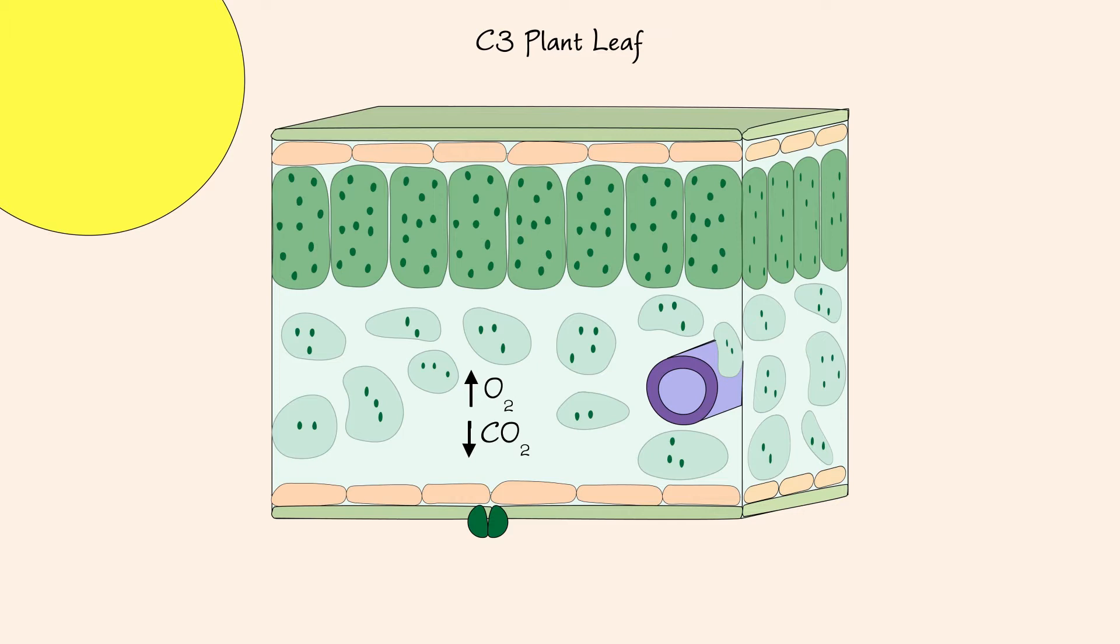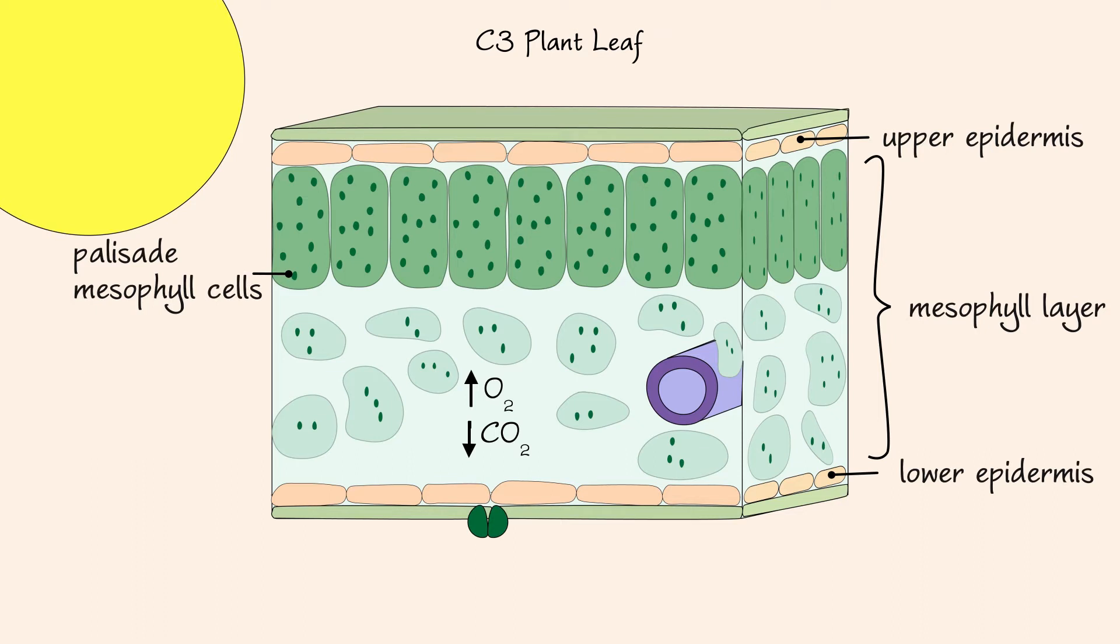Before we start discussing the evolutionary changes, let's briefly review the important aspects of the C3 plant leaf. The mesophyll layer is between the upper and lower epidermis. This layer consists of palisade mesophyll cells and spongy mesophyll cells. The palisade cells are directly overlying the spongy mesophyll cells.